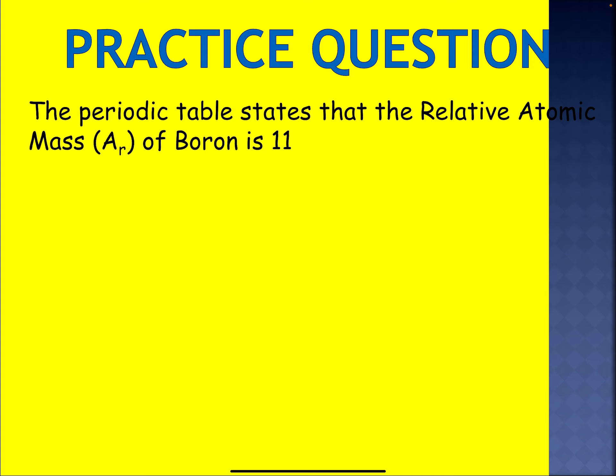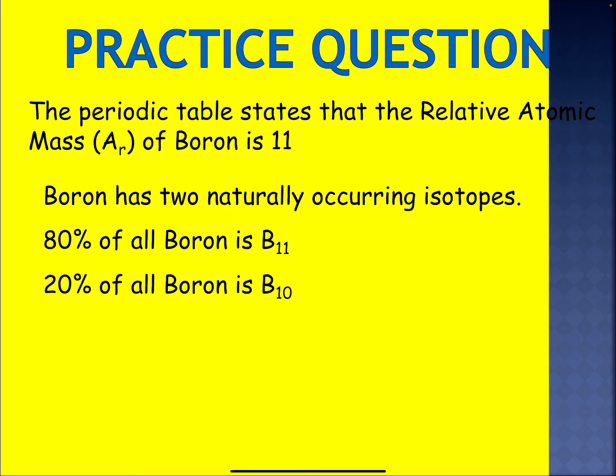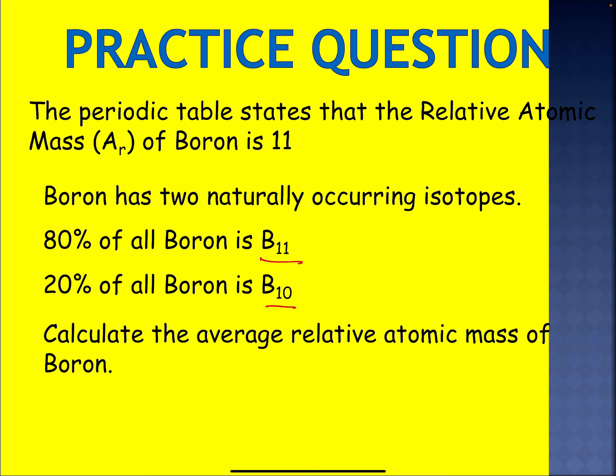The periodic table states that the relative atomic mass of boron is 11. Boron has two naturally occurring isotopes: 80% is boron-11 and 20% is boron-10. Calculate the atomic mass of boron — pause the video here and have a go, please.